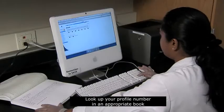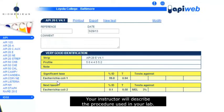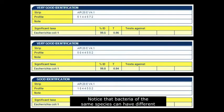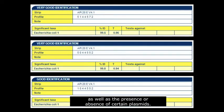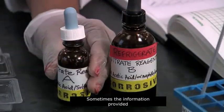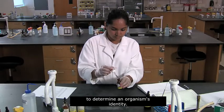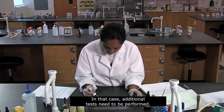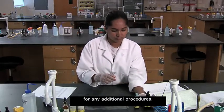Look up your profile number in an appropriate book or computer database to identify your bacterial species. Your instructor will describe the procedure used in your lab. Notice that bacteria of the same species can have different profile numbers. This natural diversity within species can be due to mutations, as well as the presence or absence of certain plasmids. Sometimes the information provided by the API-20E strip will be insufficient to determine an organism's identity. In that case, additional tests need to be performed. Follow your instructor's directions for any additional procedures.